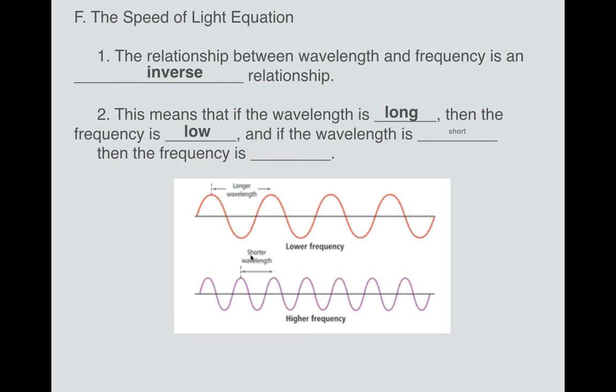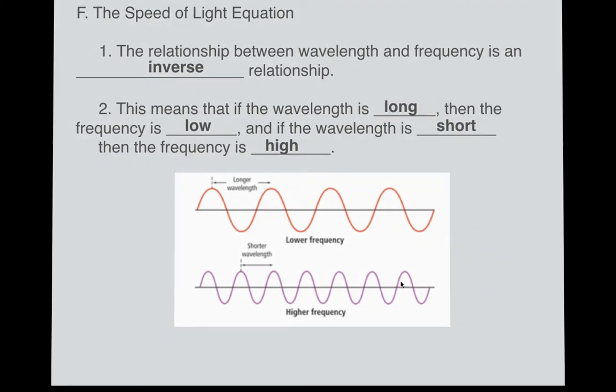Whereas if, on the other hand, I have a short wavelength like this, it's a lot shorter, then the frequency can be really high. So I can fit one, two, three, four, five, six waves in that same amount of space. And that's the speed of light. But it's the relationship between the wavelength and the frequency of a wave or a photon of light.